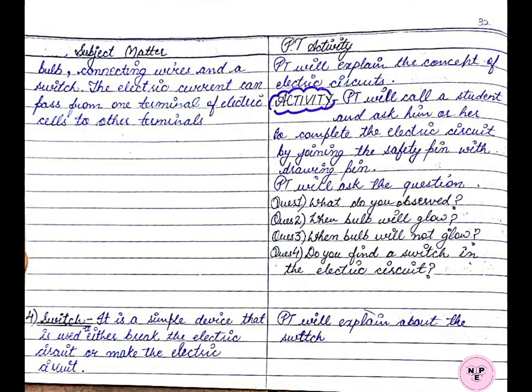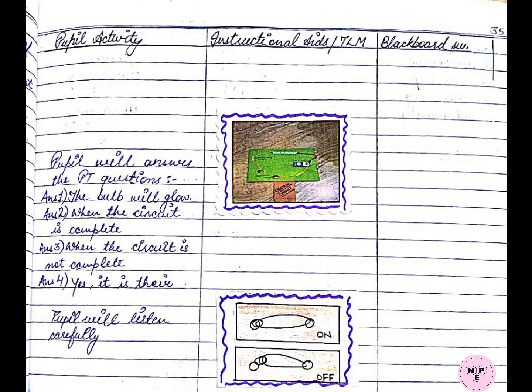The pupil teacher can also bring a model of an electric circuit into the classroom for active participation of the pupils, because by performing and observing an activity, the student's learning capacity gets enhanced to a greater extent. That's all for today's video.